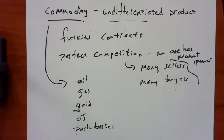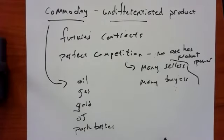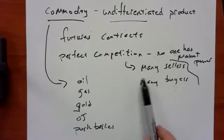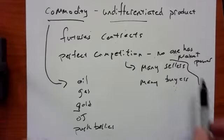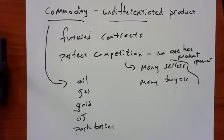The point is that you generate a market of perfect competition when there are many sellers, many buyers, and the product is otherwise undifferentiated. You wind up with a situation where no one has market power and the market generates a price. At the market price, you can sell an unlimited amount of product into the market.